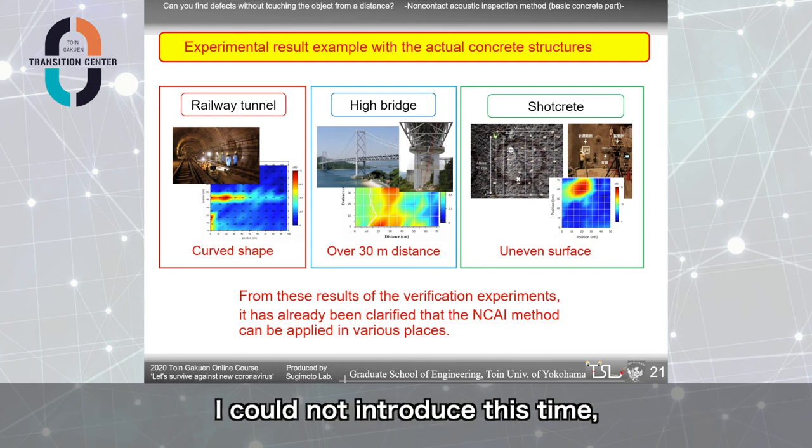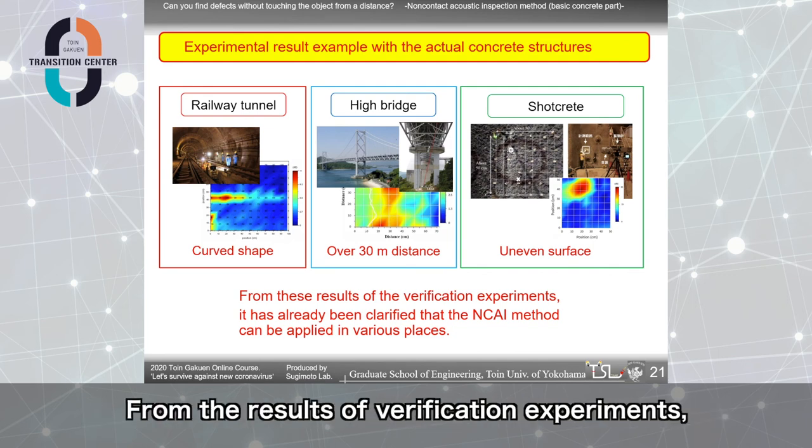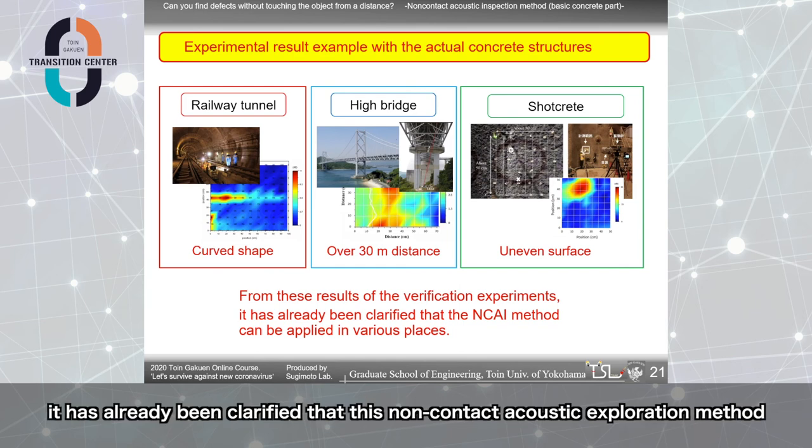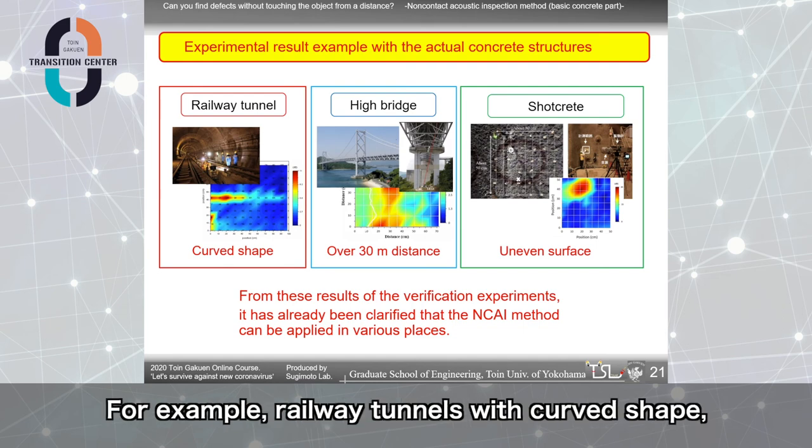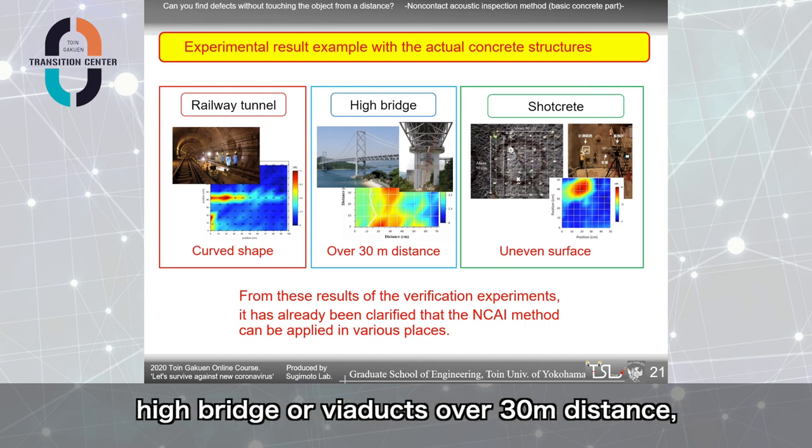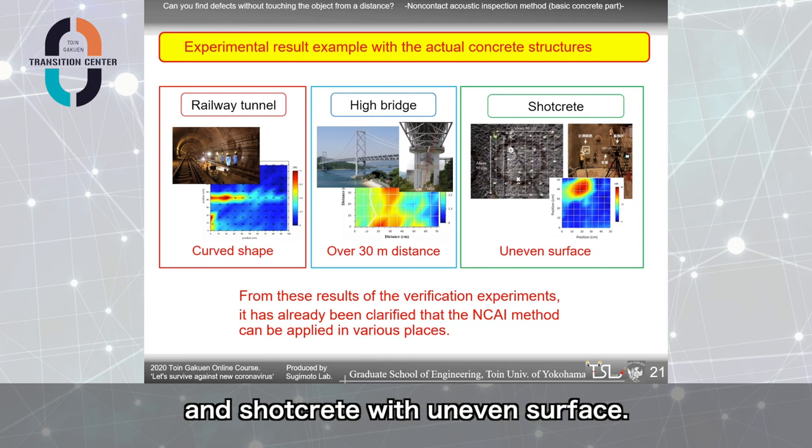I couldn't introduce this time from the result of verification experiment. It has already been clarified that this non-contact acoustic inspection method can be applied in various places. For example, railway tunnels with curved shape, high bridge or pier docks over 30m distance, and short grid with uneven surface.